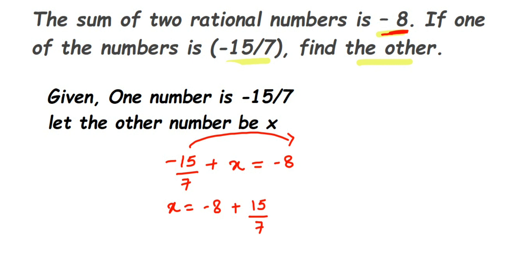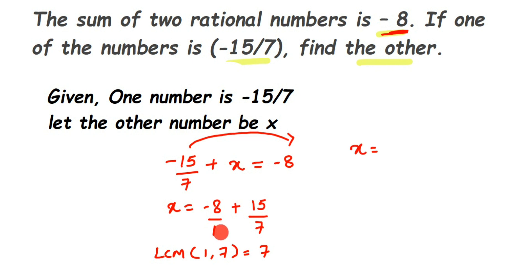Since -8 has no denominator, we write it as -8/1. To add two rational numbers, the denominators must be the same. Here we have 1 and 7, which are not the same, so we take the LCM of 1 and 7, which equals 7. We multiply -8/1 by 7/7 to get a denominator of 7, and the second number already has 7 in the denominator.